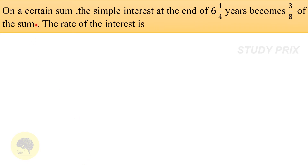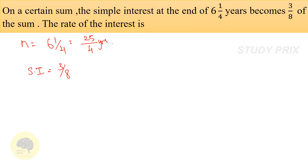Coming to the next question: On a certain sum, the simple interest at the end of 6¼ years becomes 3/8 of the sum. Find the rate of interest percentage. Write down the data: n = 6¼ years = 25/4 years. The question states that simple interest becomes 3/8 of the sum, therefore SI/P = 3/8.